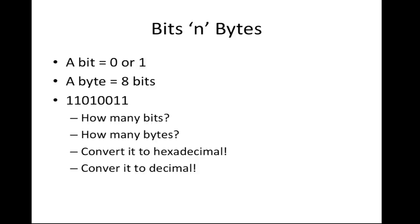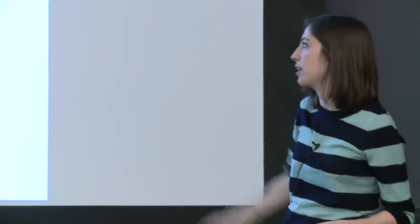Let's start at the beginning with bits and bytes. A bit is just a zero or a one, and a byte is a collection of eight of those bits. Looking at this collection of bits right here, we can count — there are eight of them, eight zero-or-one units. Since there are eight bits, that's one byte.